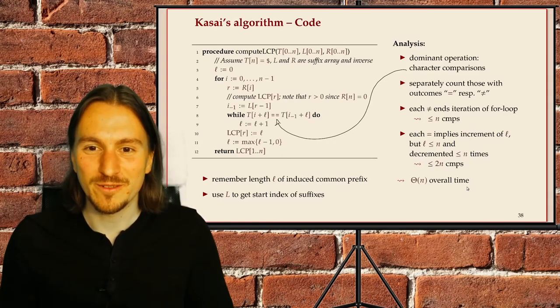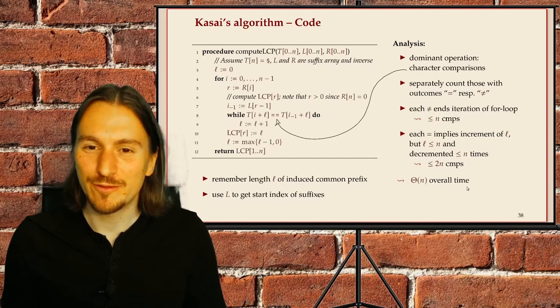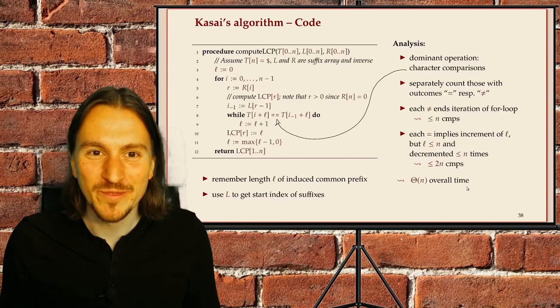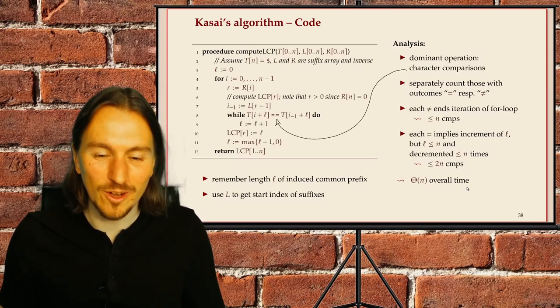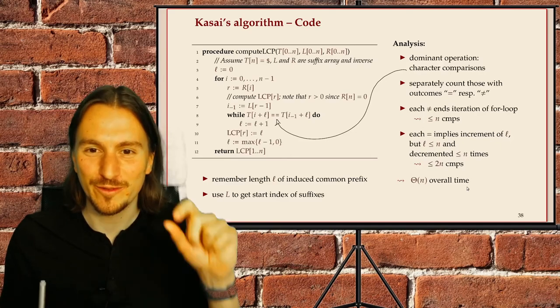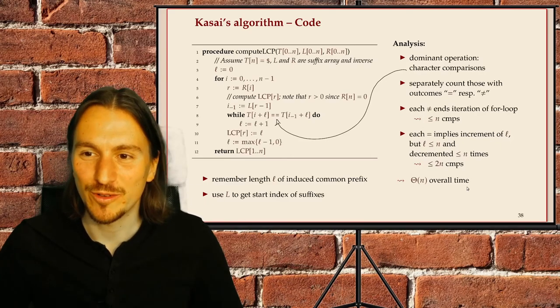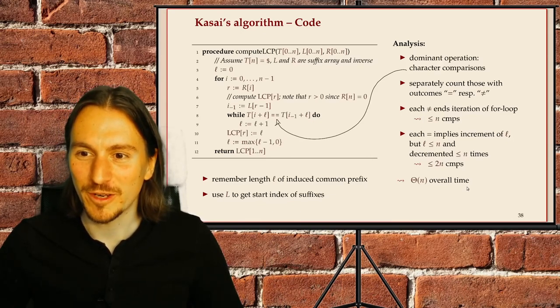So both operations are overall limited by a constant times N. So Kasai's algorithm runs in linear time, even though it's based on the naive version of just comparing the characters from left to right. But by exploiting the fact that a long shared prefix of two suffixes implies another shared prefix of two other suffixes, we can get the overall running time to linear.